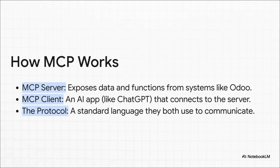So how does this magic bridge actually work? It's a pretty straightforward client-server setup. You have an MCP server that safely exposes your Odoo data. Then you have the MCP client — which is your AI chatbot — that connects to that server. The protocol itself is just the shared language they both agree to speak. It's an elegant and secure way to link these two worlds together.